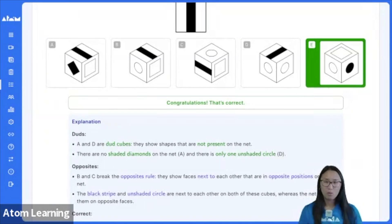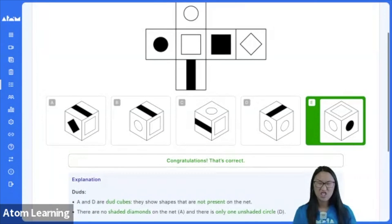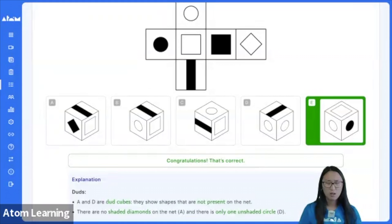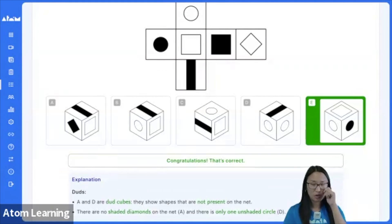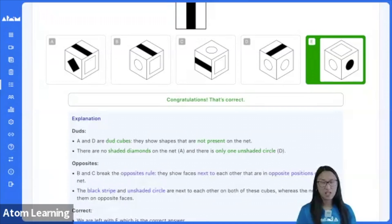So starting off with A. A is a dud cube. So it has a diagonal rectangle-y thing which is not found on the net. D is also a dud cube. It's got two circles instead of just the one.